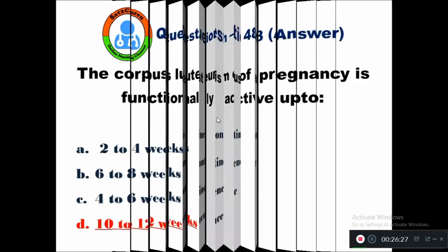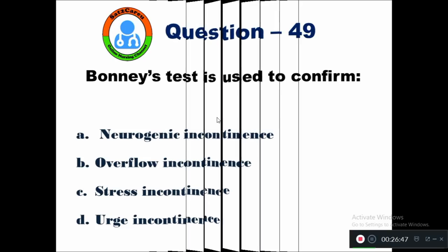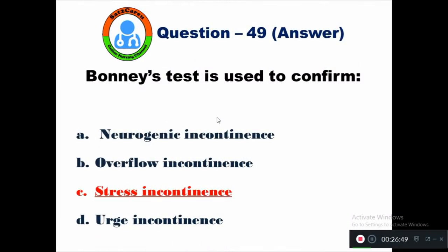Question 49: Bonney's test is used to confirm — option A neurogenic incontinence, B overflow incontinence, C stress incontinence, D urge incontinence. Bonney's test is used to confirm stress incontinence. At the time of stress incontinence, to diagnose it, Bonney's test is used.